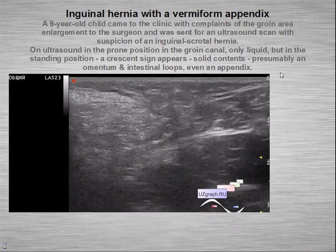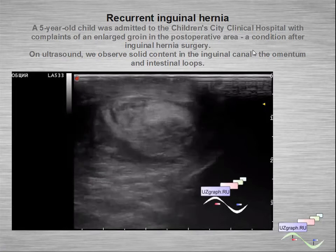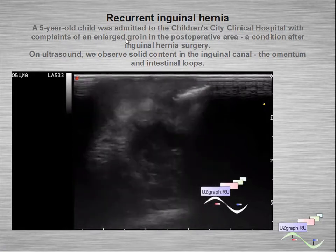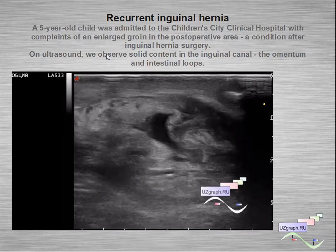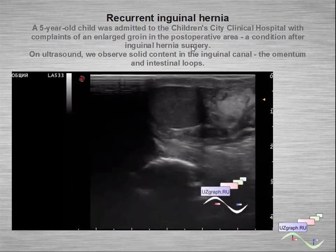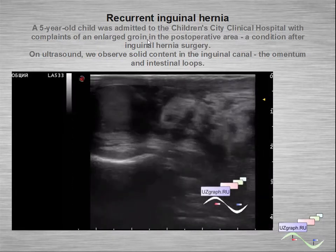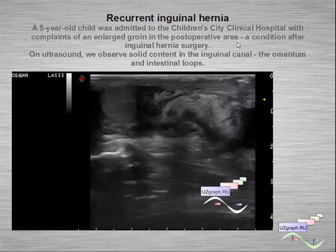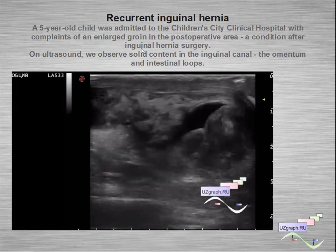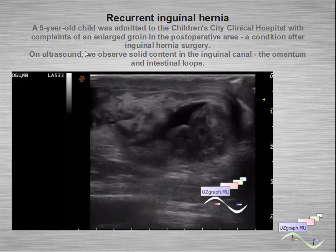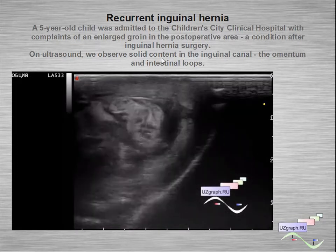Recurrent inguinal hernia: a five-year-old child in the children's city hospital presented with complaints of an enlarged groin in the post-operative area — a condition after inguinal hernia surgery. On ultrasound we can see solid content in the inguinal canal: the omentum and intestinal loops.